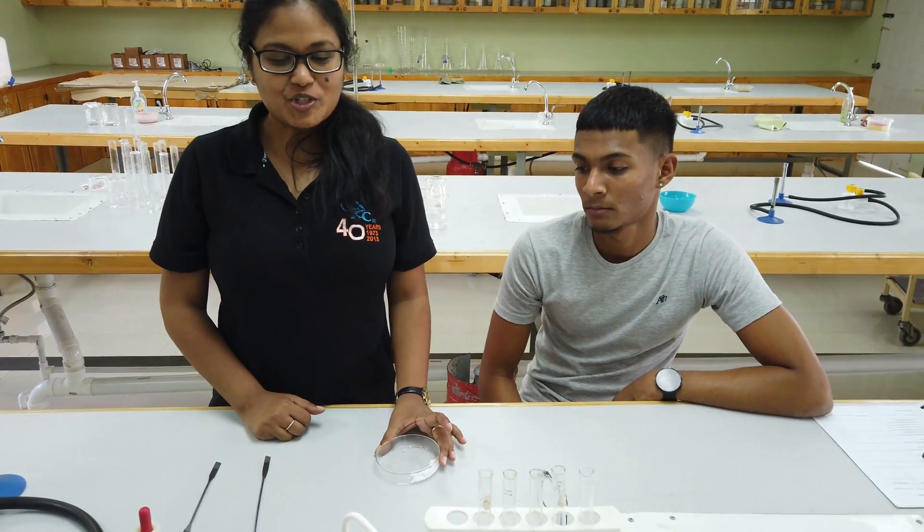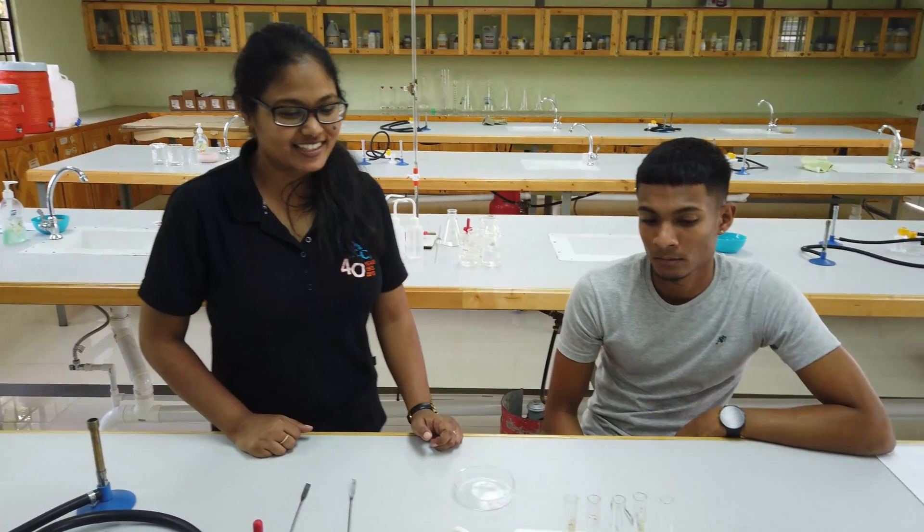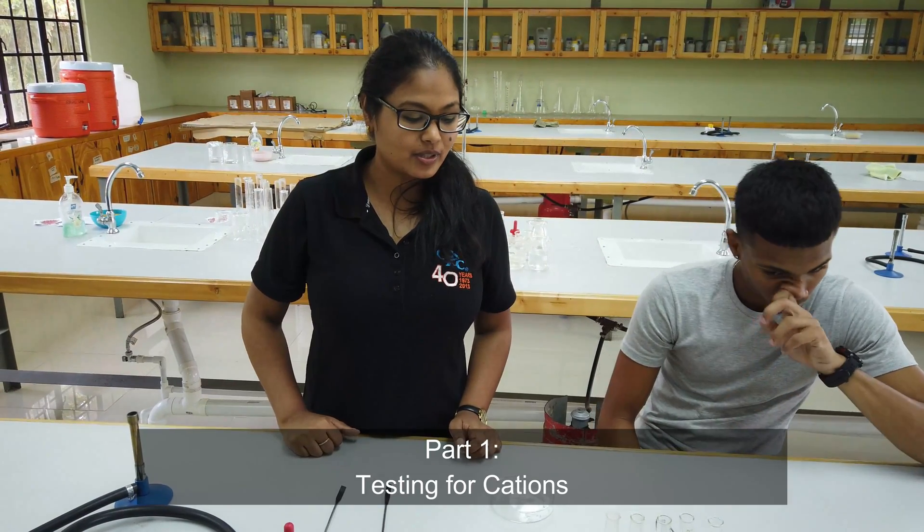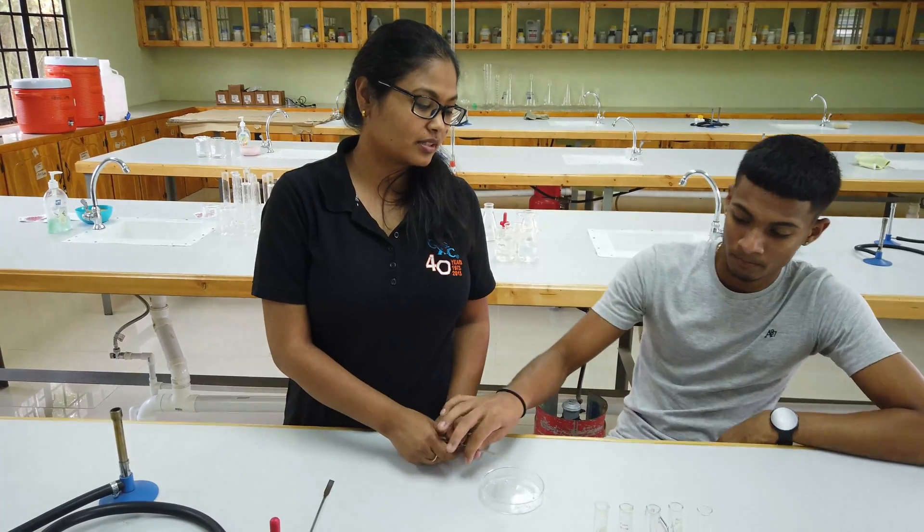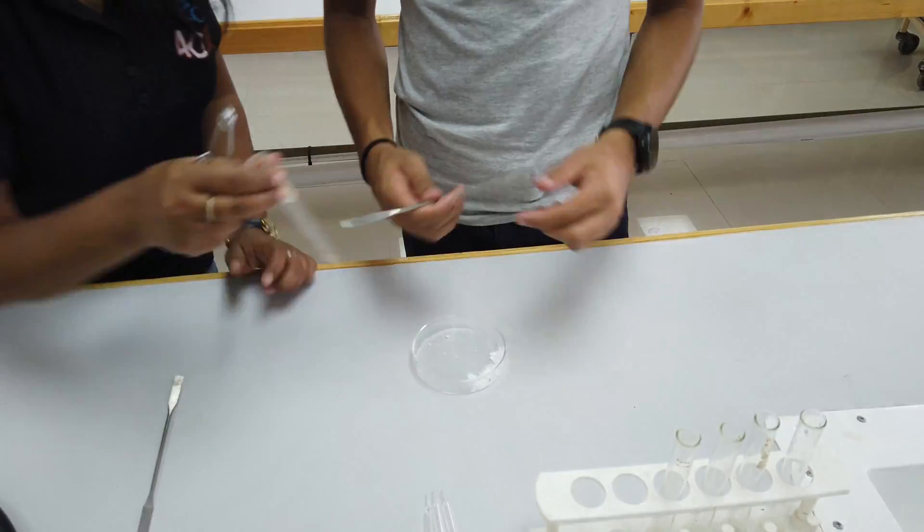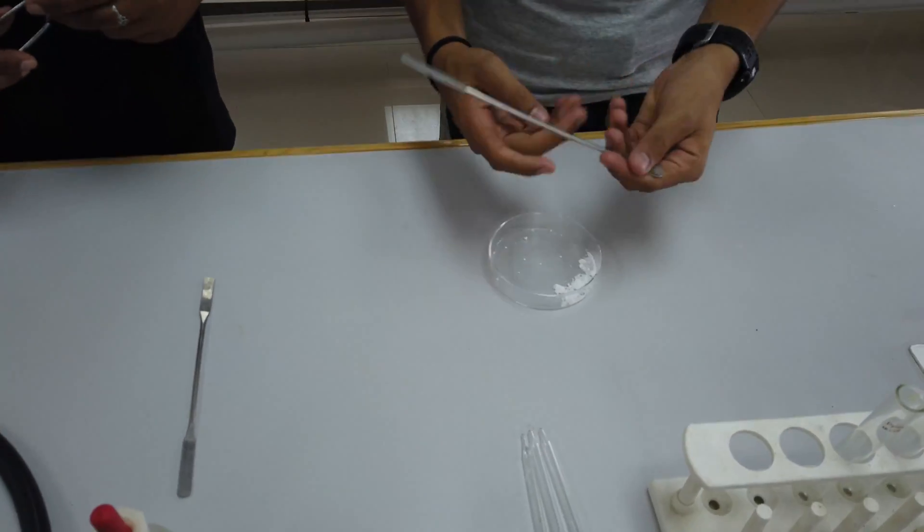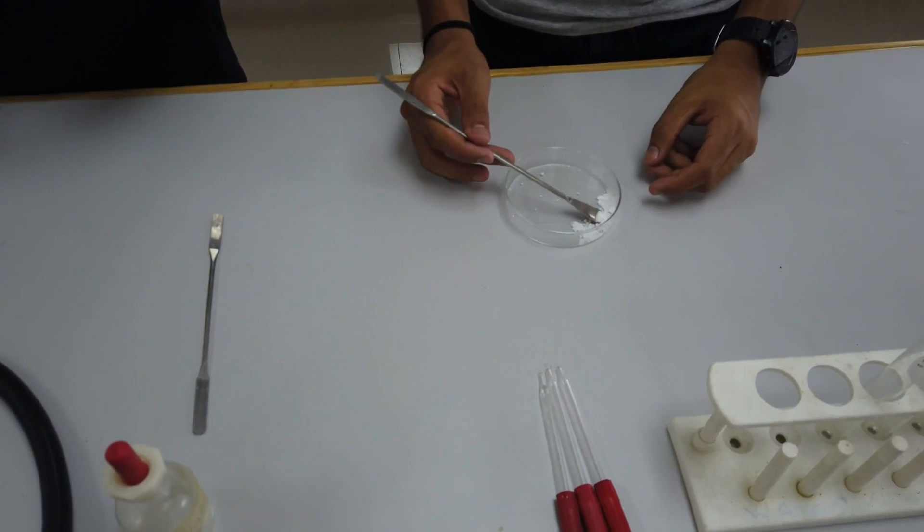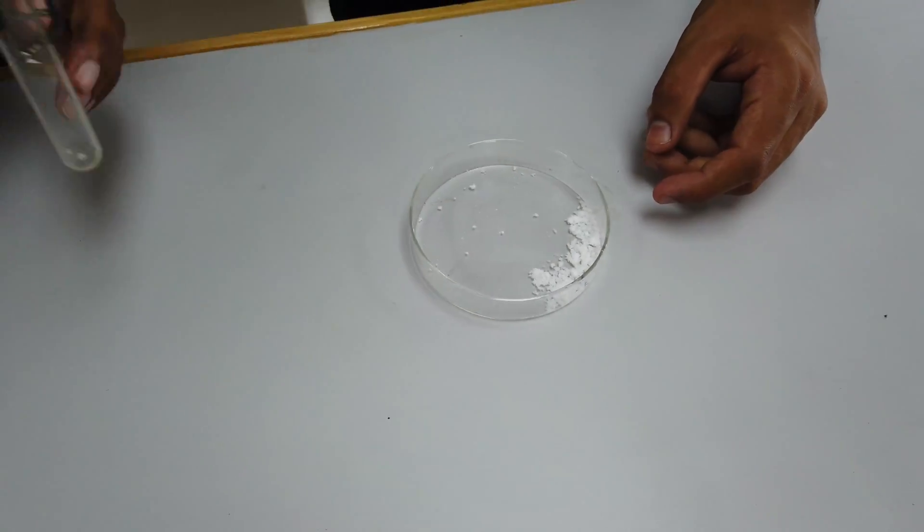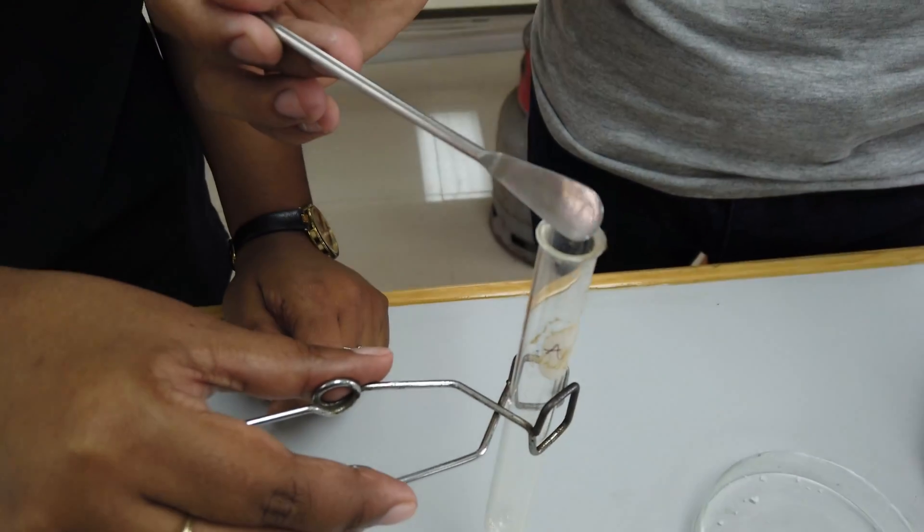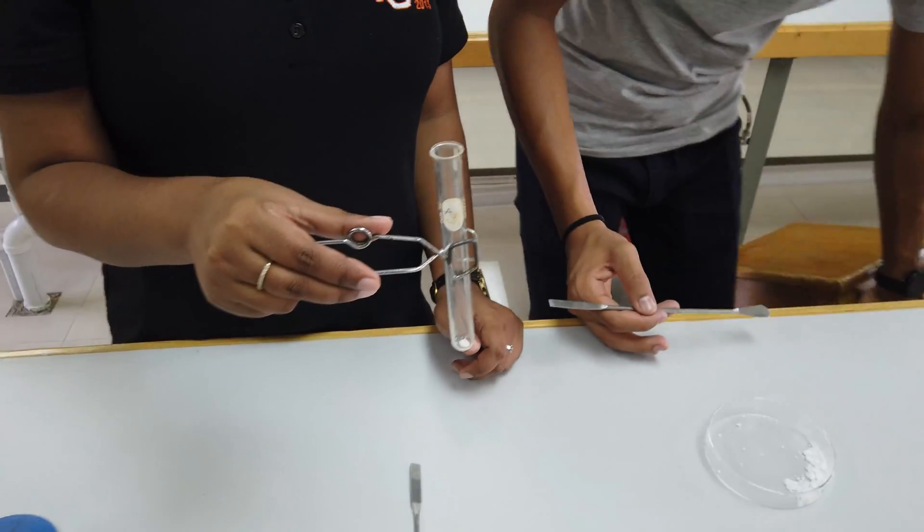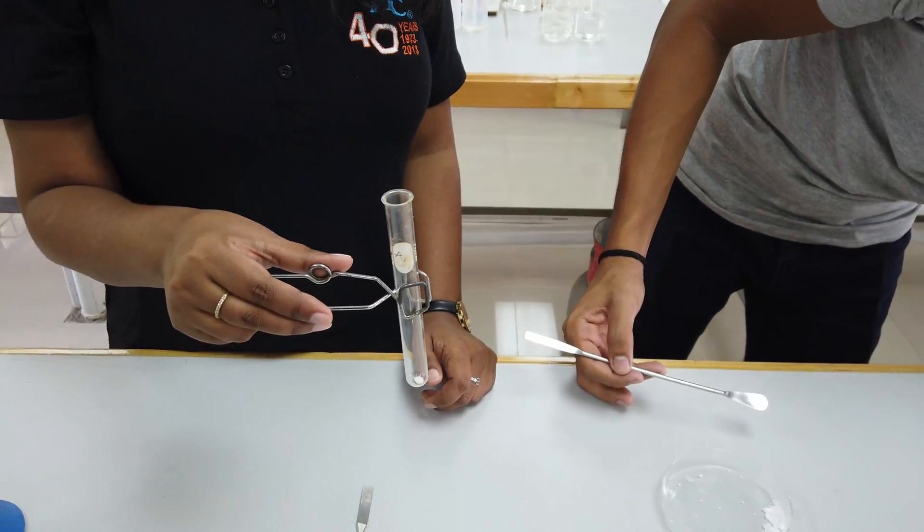The first thing we're going to look for is the cation. To determine what the cation is, we're going to take just a tiny, tiny little bit of salt - even less, just tiny.